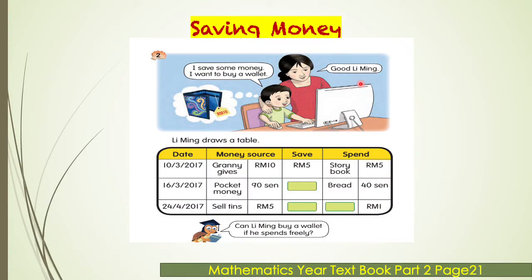Now look at this saving money example. Li Ming wants to save some money because he wants to buy a wallet, so Li Ming draws a table. At 10 March 2017, his grandmother gives him 10 ringgit. Then he spends 40 cents to buy a bag of sweets for 90 cents. Then he spends 40 cents to buy a bread, and the balance of his money now is 50 cents.